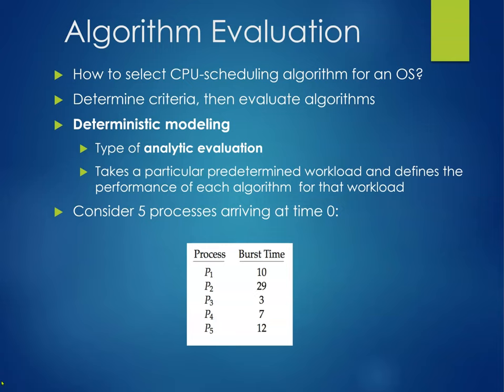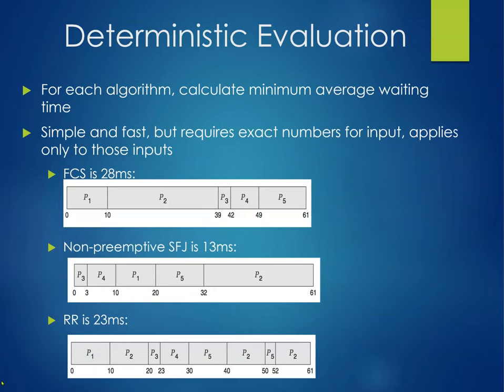How do we determine which algorithm to use? We determine criteria and then evaluate algorithms. Deterministic modeling is a type of analytic evaluation — it takes a particular predetermined workload and defines the performance of each algorithm. For each algorithm, we calculate the minimum average waiting time. It's simple and fast, but requires exact input numbers and applies only to those inputs.